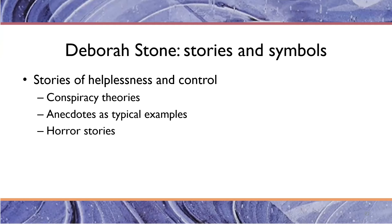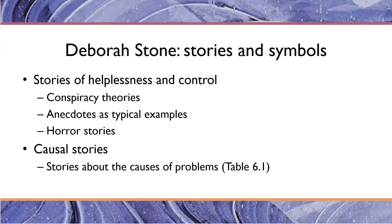There's also the notion of causal stories — you can look at table 6.1 in the book. We tell stories about the causes of problems. As the originators of the narrative policy framework explain, humans are storytellers — they call us homo narrans, the storytelling human. The organization of a narrative around a story is one of the most powerful ways of communicating ideas. So keep an eye out as you're studying public policy and think about how people tell stories about problems.